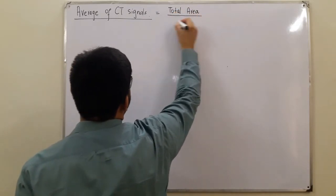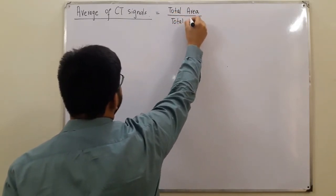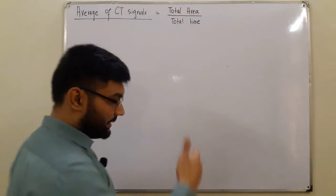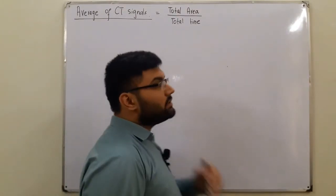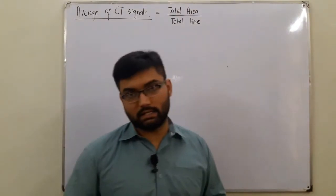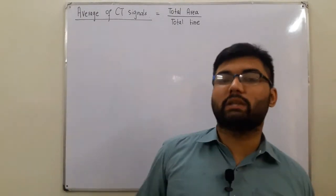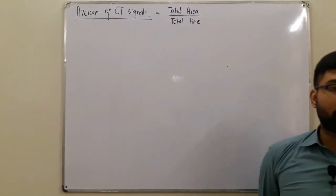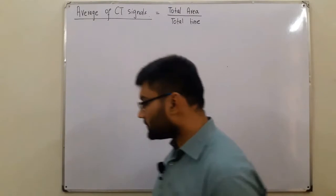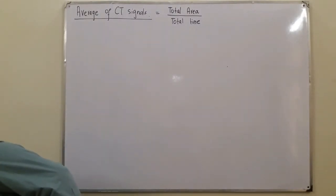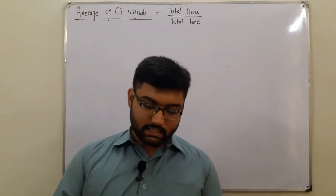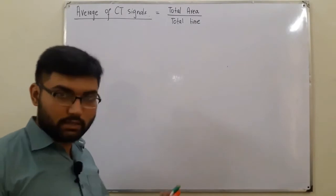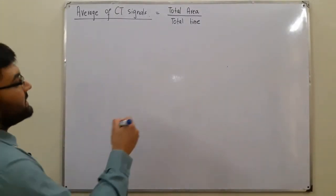This is the general formula: average equals total area upon total time. We have two basic classes of signals — periodic signals and aperiodic signals — so the formula for average is going to be different for each. The area of a signal is calculated by integrating it over the entire time axis.